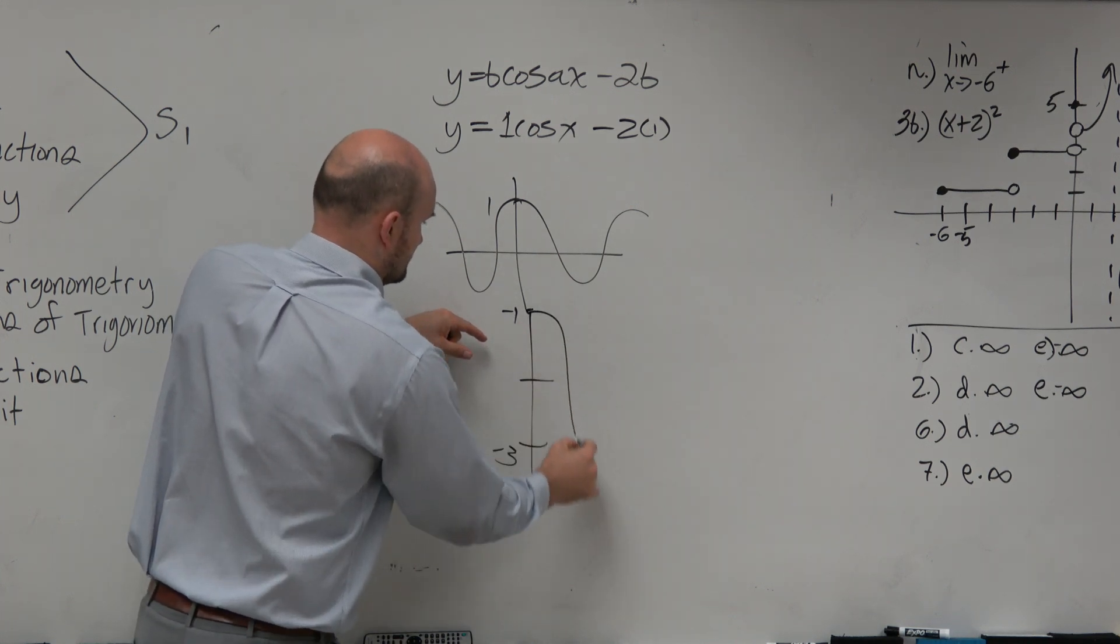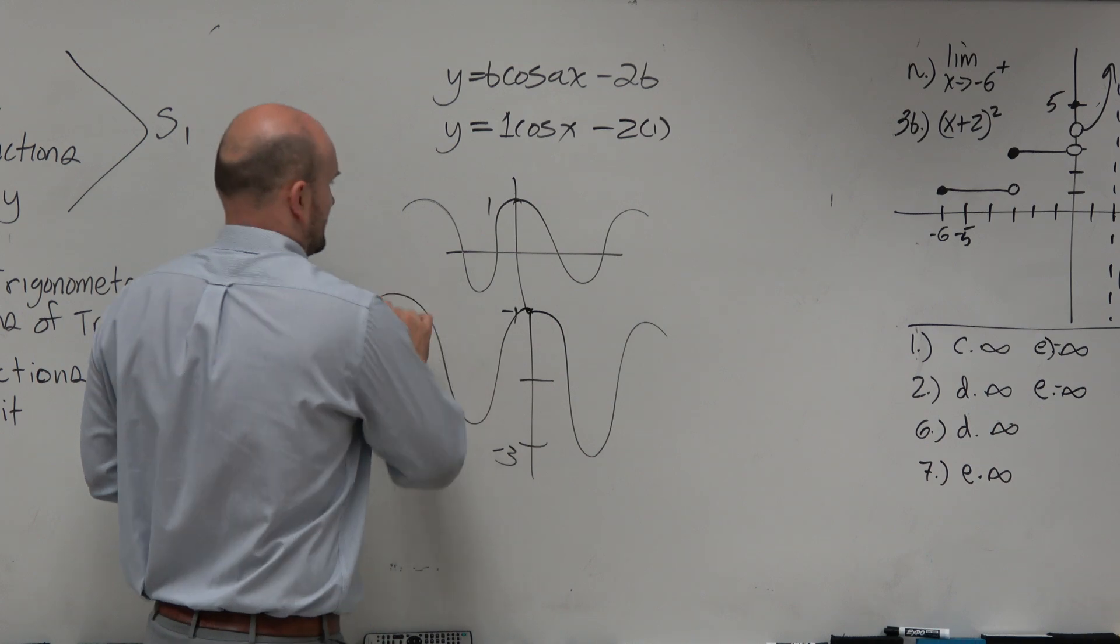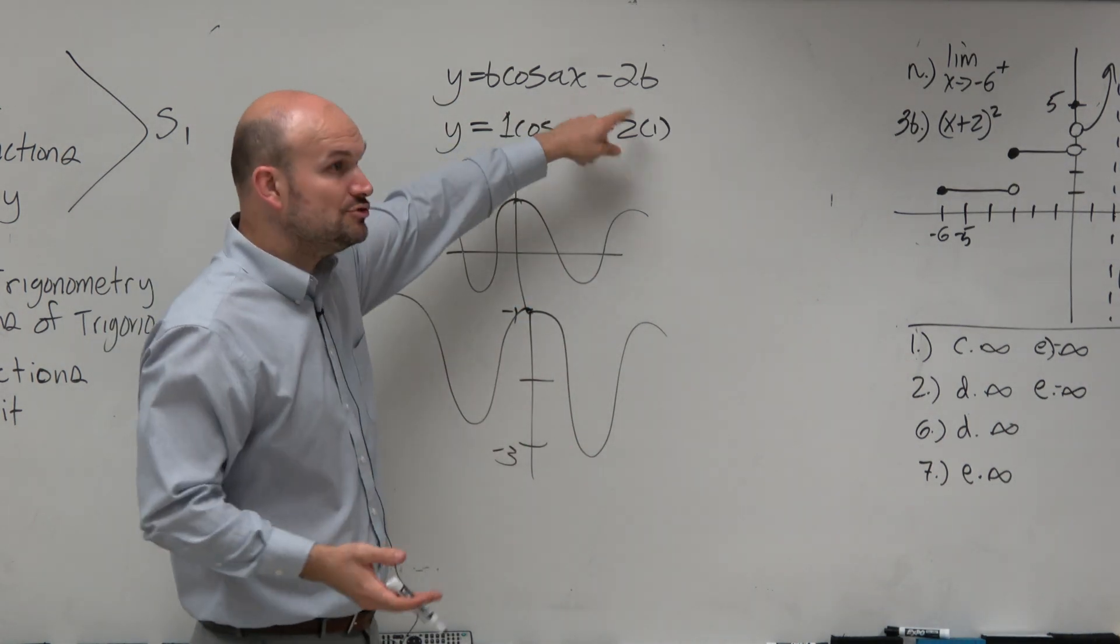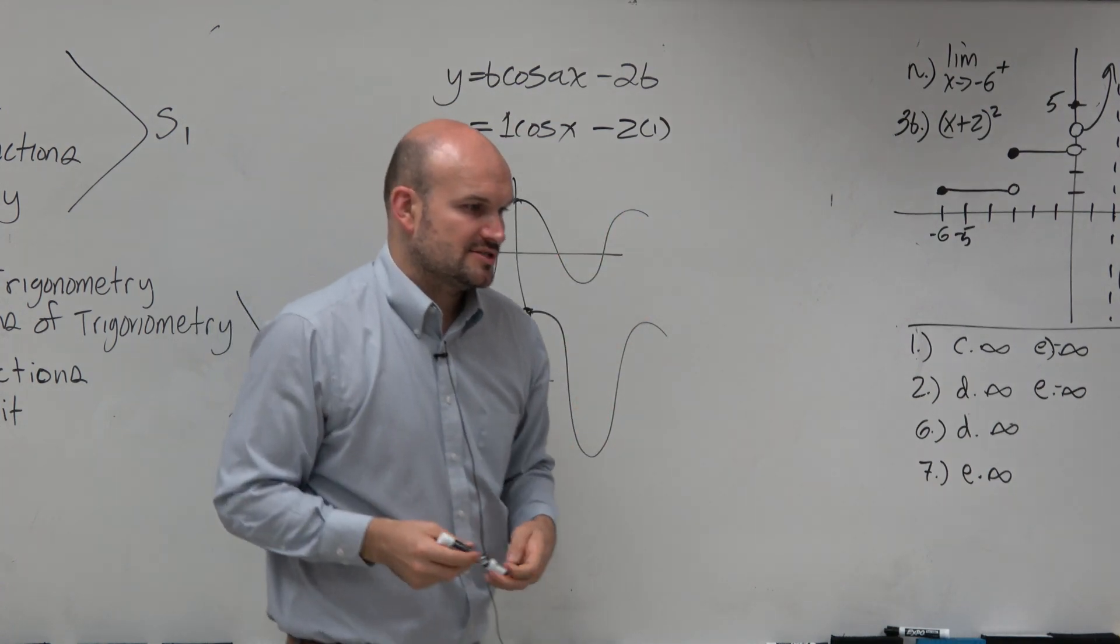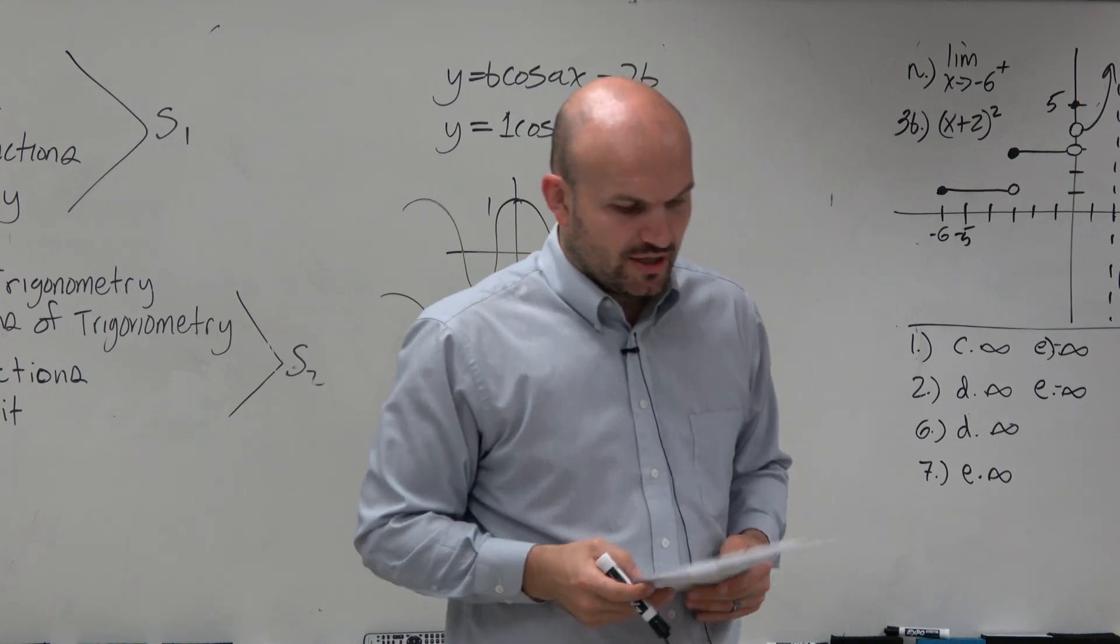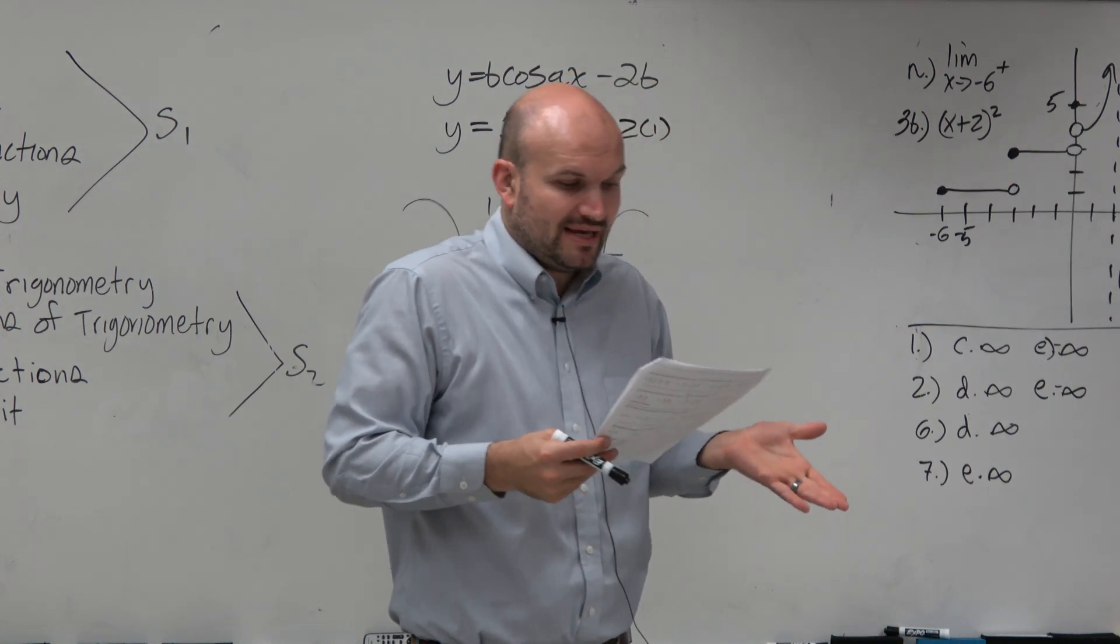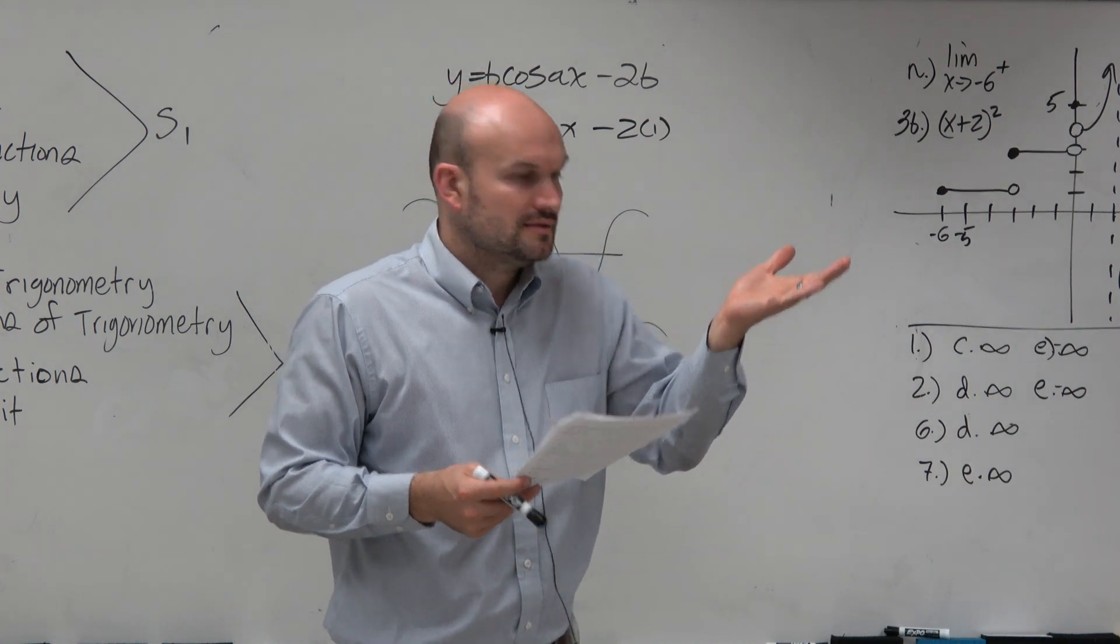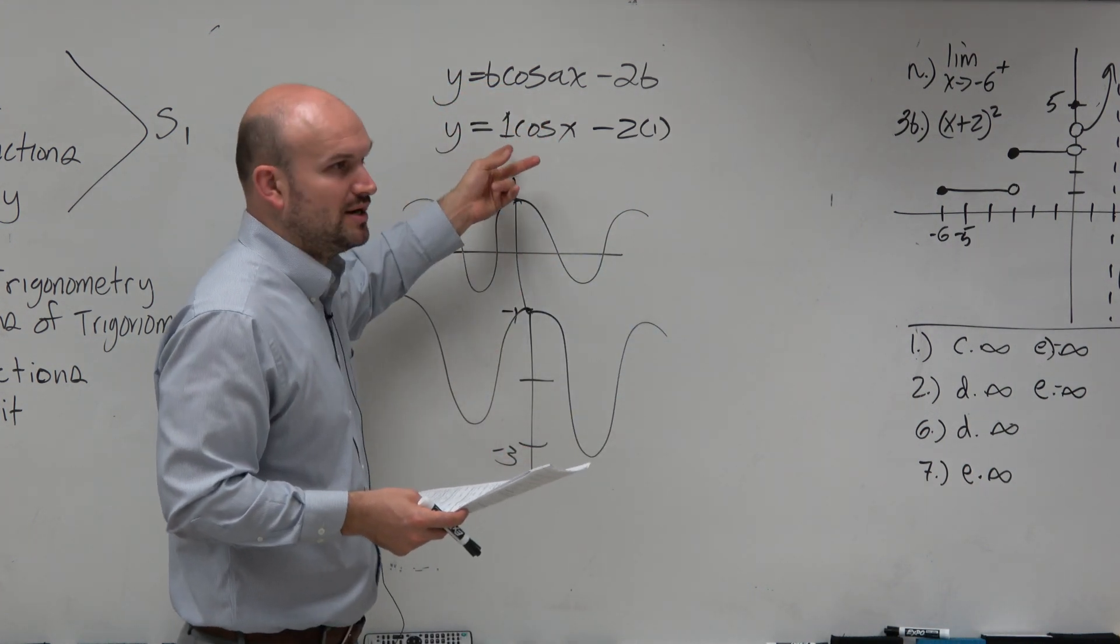So now it's from negative 2 to negative 3. Same graph, but now it's just been shifted down. So that minus 2B is vertically shifting the graph down. So you can see that then that makes sense, that my range would be from negative 3B all the way up to negative B.